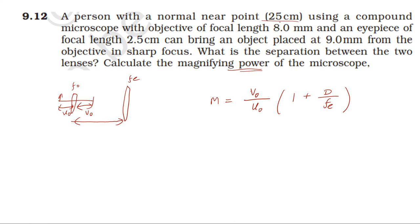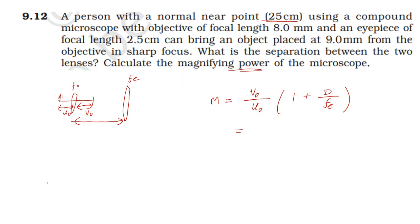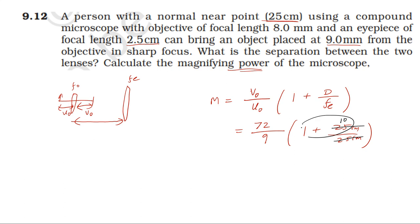The magnifying power when image is formed at least distance of distinct vision: v0 = 72 mm, u0 = 9 mm, D = 25 cm, fe = 2.5 cm. So M = (72/9) × (1 + 25/2.5) = 8 × (1 + 10) = 8 × 11 = 88. The magnifying power of the compound microscope is 88.